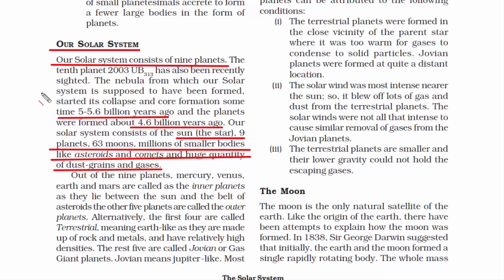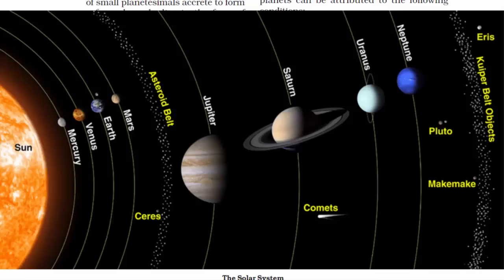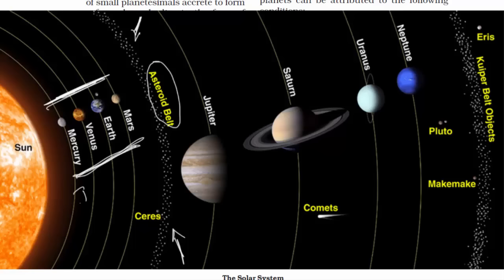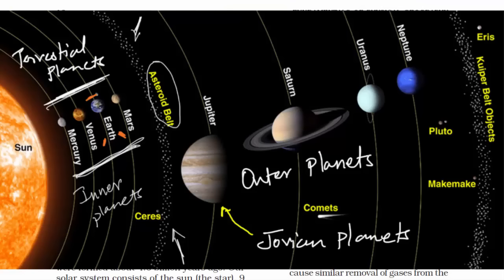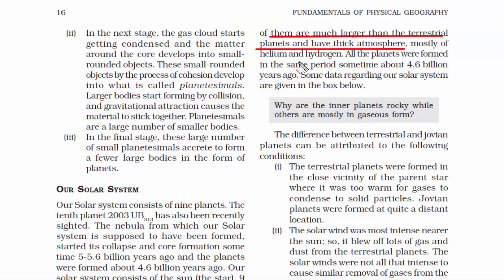Out of the eight planets, Mercury, Venus, Earth and Mars are called the inner planets. After Mars, the Jupiter planet comes, and in between Mars and Jupiter there is a big asteroid belt. Planets outside the asteroid belt, including Jupiter, are known as outer planets. Planets inside the asteroid belt are called terrestrial planets, meaning they have Earth-like similarities — they consist of rock and metals. Planets outside the asteroid belt are called Jovian or gas giant planets. They are huge planets but have very thick atmospheres, mostly of helium and hydrogen.